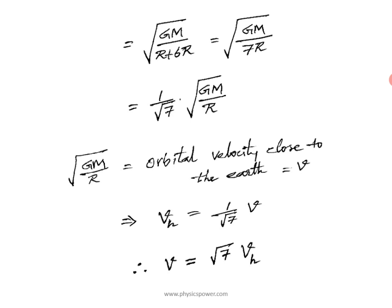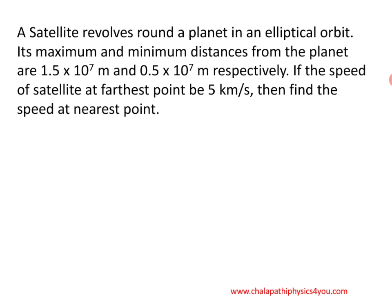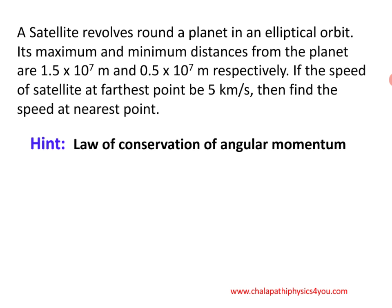If you do two problems, the next problems will be easy. Next problem — I will consider a slightly different one. A satellite revolves around a planet in an elliptical orbit. Its maximum and minimum distances from the planet are 1.5 × 10⁷ m and 0.5 × 10⁷ m respectively. If the speed of the satellite at the farthest point is 5 km/s, find the speed at the nearest point. Observe the diagram.